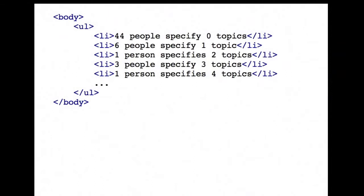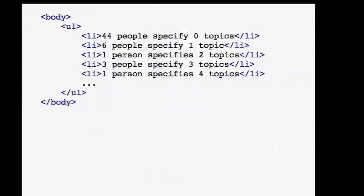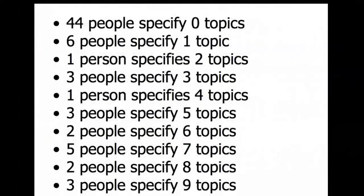Once we run this code, our web page is just an unordered list with a whole bunch of list items. What we've done is used D3 to join the JSON array with a very simple bunch of web page elements. At the top: 44 people aren't interested in anything, six people are interested in one thing, and so on. Someone's listed 106 topics — totally interested in everything.